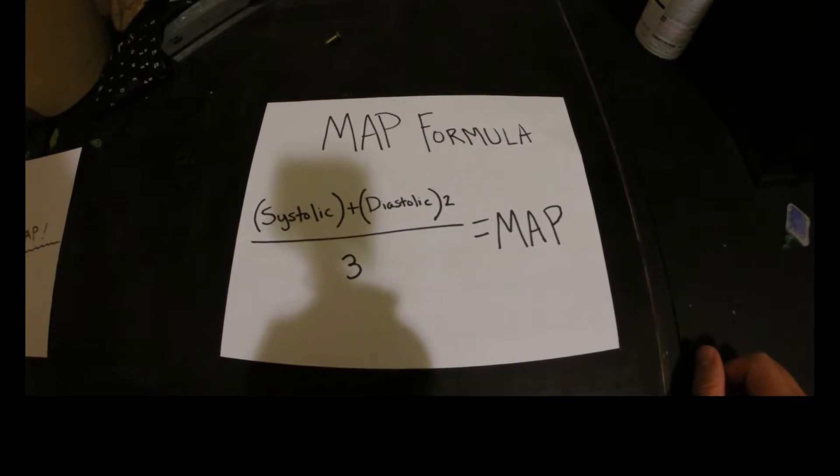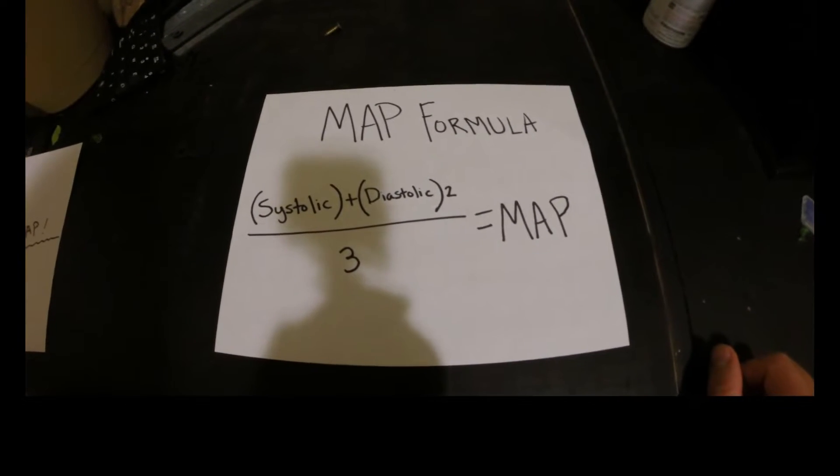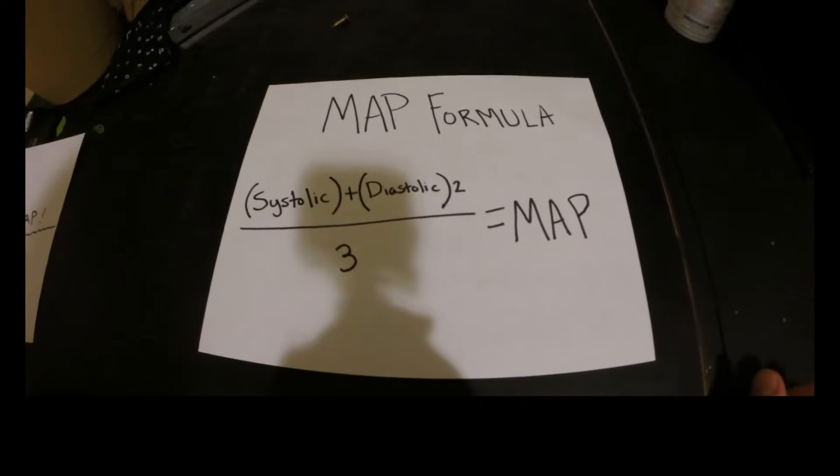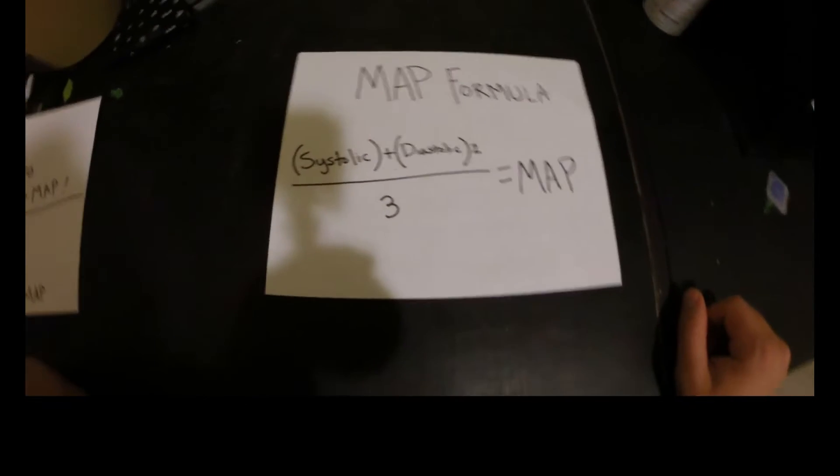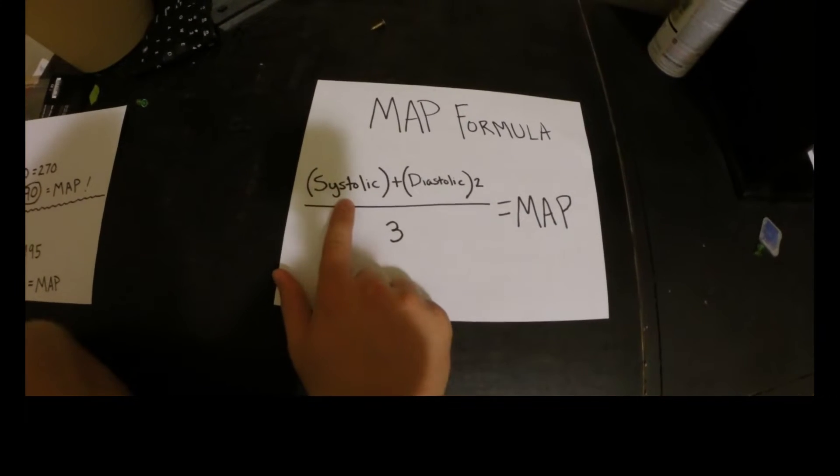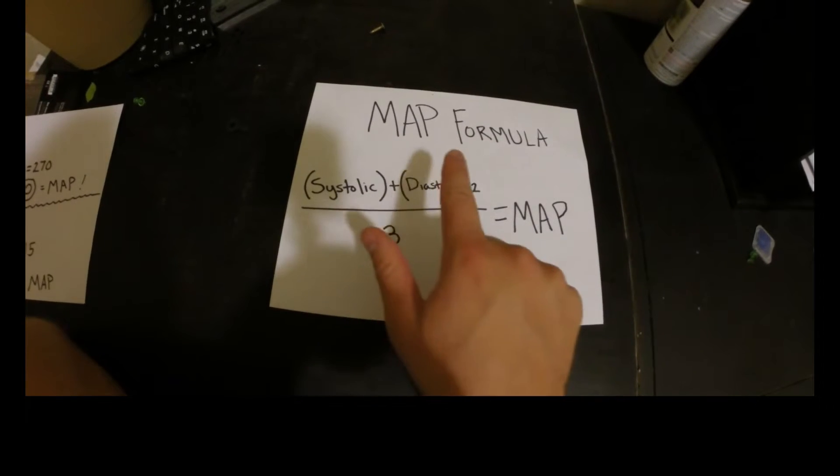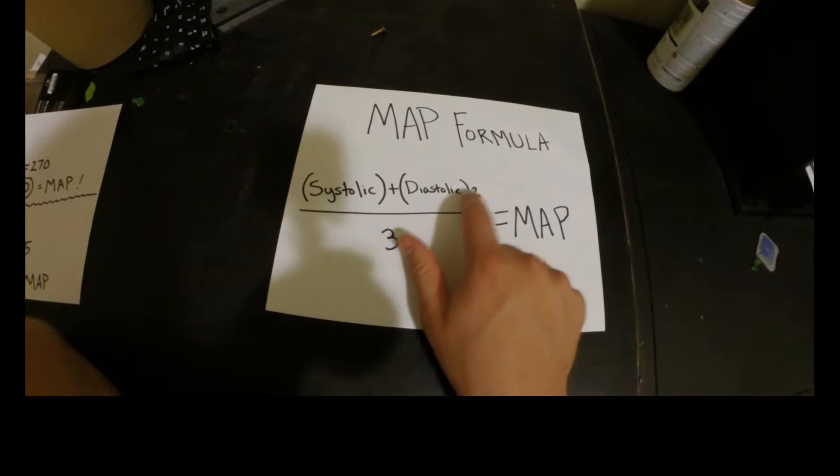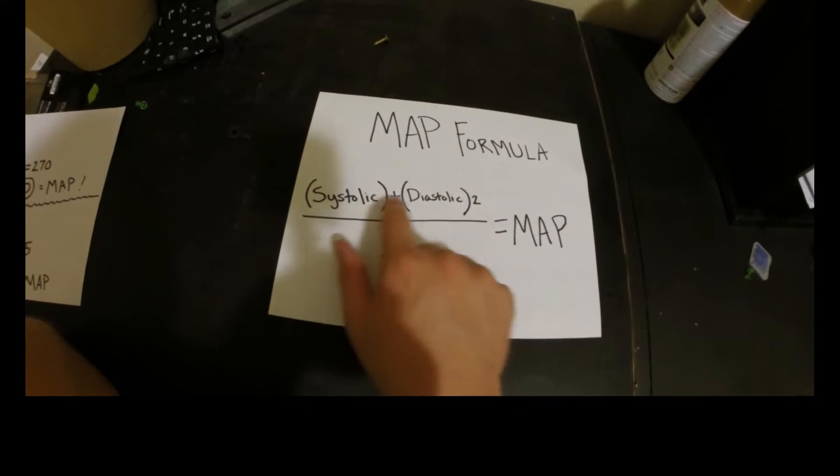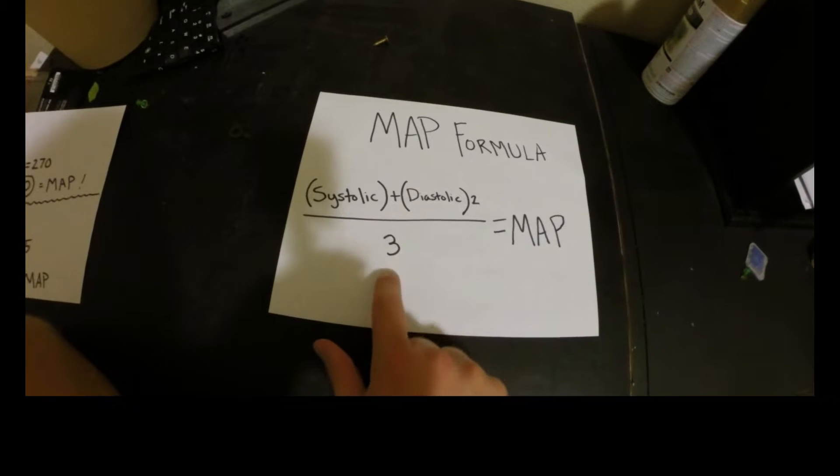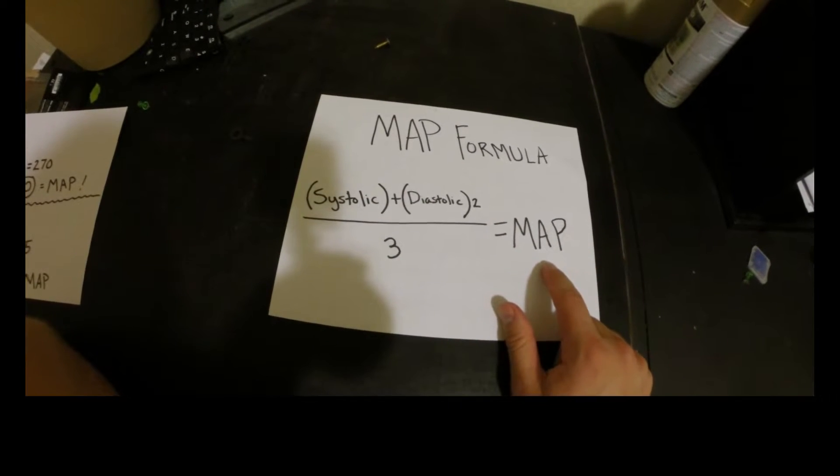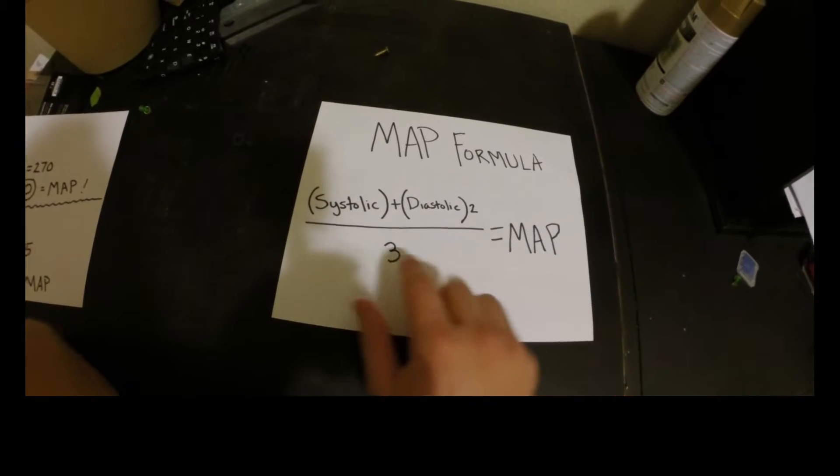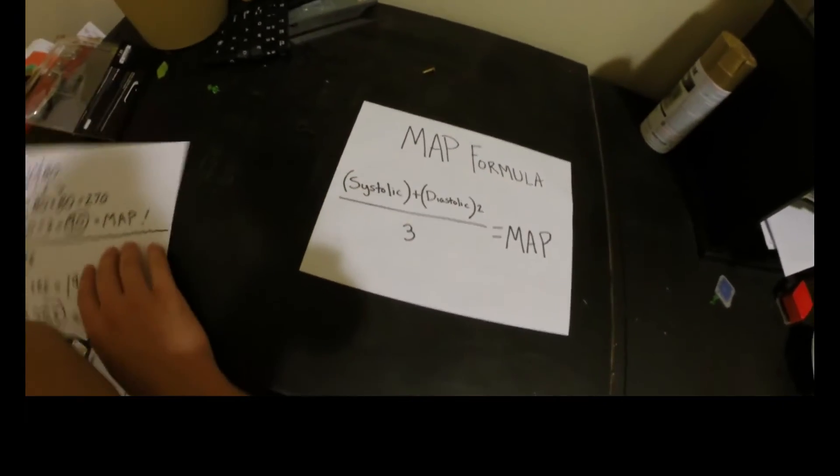Okay guys, so this is my favorite MAP formula. It's super simple to use. It may look a little complicated, so we'll break it down. All you do is take your systolic number and then you take your diastolic number on your blood pressure. You times it by two. You add these numbers together, divide it by three. That's your MAP. Super simple.